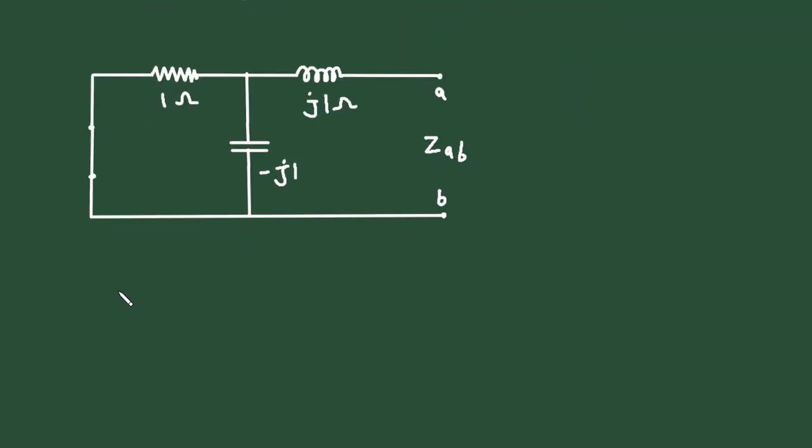Now we can find the value of Z_ab. So Z_ab is equal to this j1 ohm is in series with these two parallel impedances. So 1 times minus j1 divided by 1 plus minus j1.